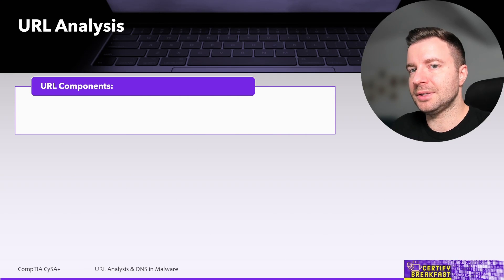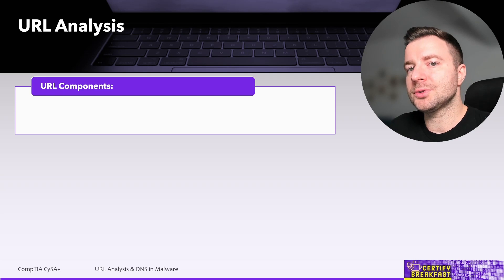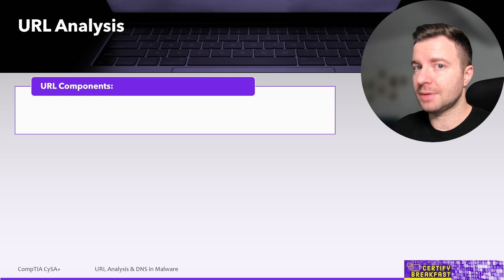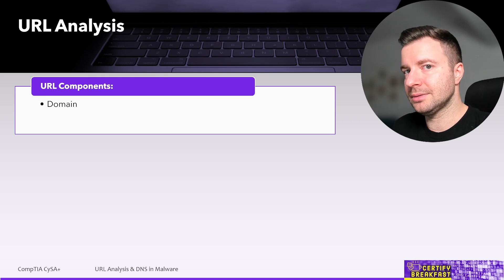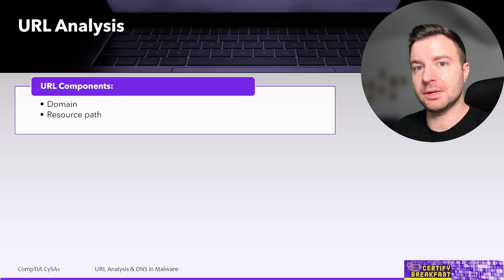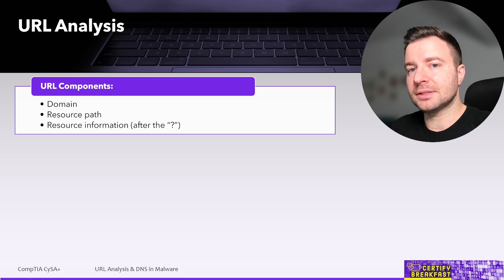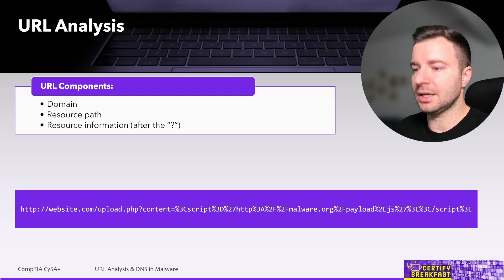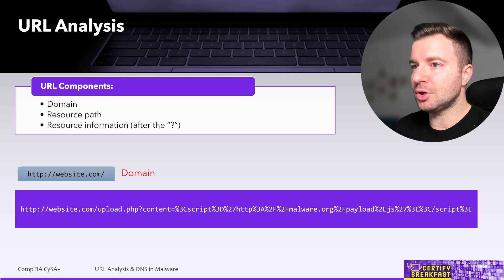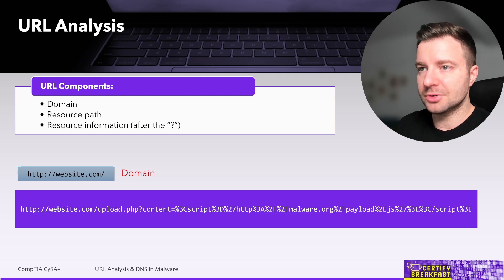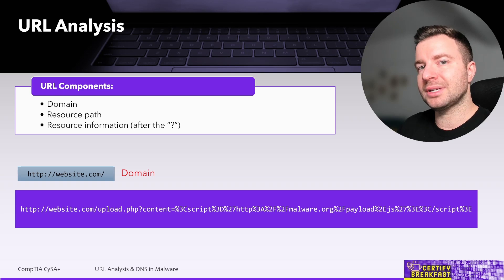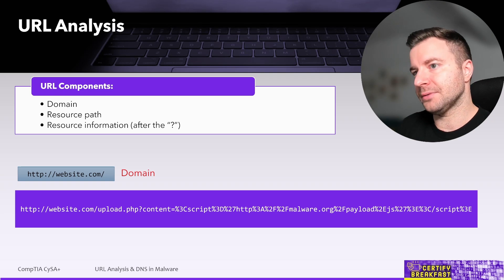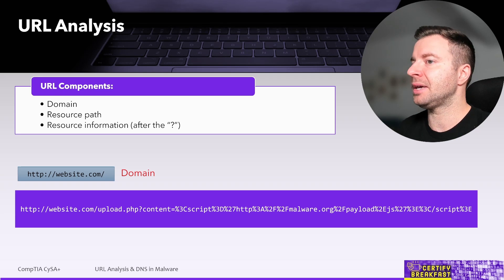Now let's talk about URL analysis. A URL can actually have multiple components — not just the domain or the resource being addressed, but they can also encode information and submit it from the client to the web server, and that information can potentially be malicious. The components inside a URL are: the domain, the resource path — which might be a file or look like a directory — and anything after the question mark is about sending information to the resource itself.